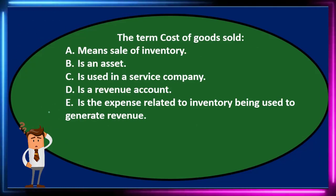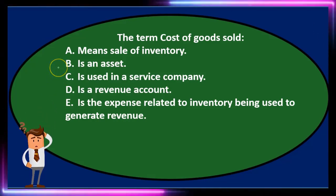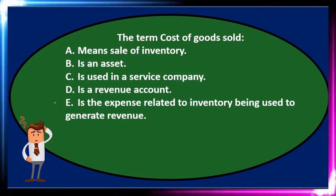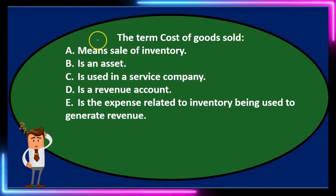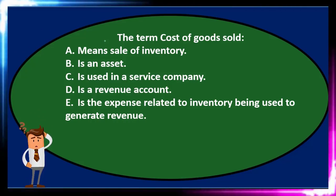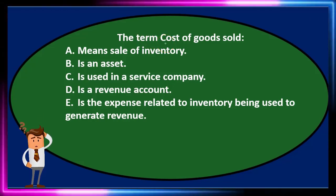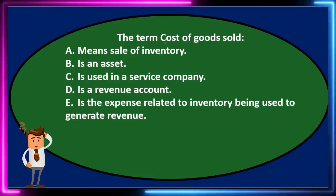Next question: the term 'cost of goods sold' — A: means sale of inventory. B: is an asset. C: is used in a service company. D: is a revenue account. E: is the expense related to inventory being used to generate revenue. Before going through the options, note that cost of goods sold is an income statement account — basically an expense account. It reduces net income and is related to inventory being used to help generate revenue.